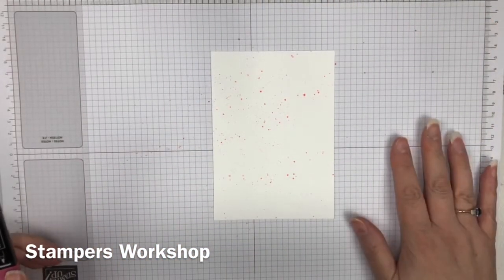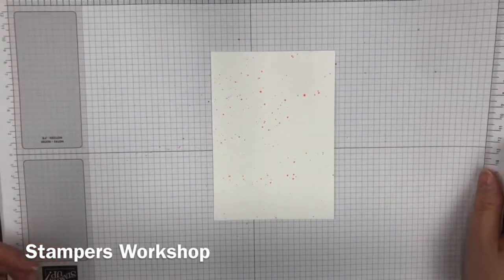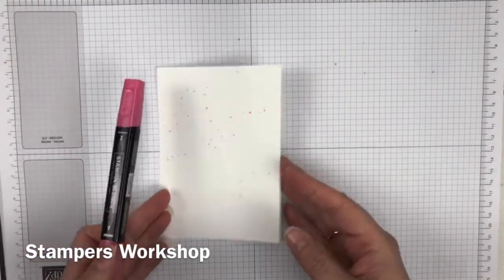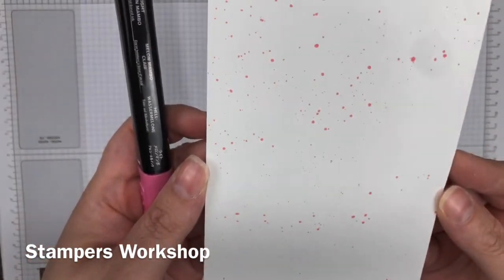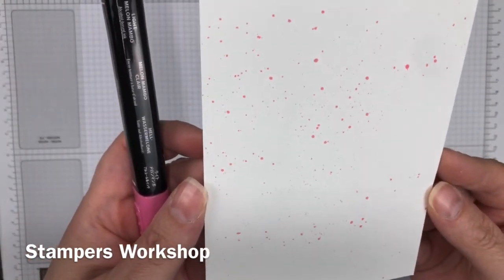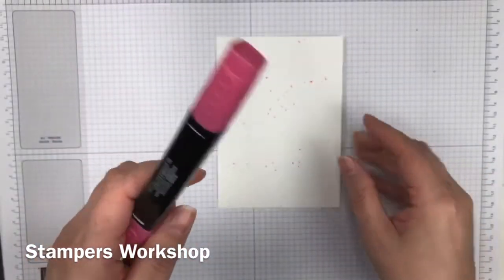I always have my pad underneath because as you can see, it goes everywhere. But it's just a really easy way to get a really pretty spatter.